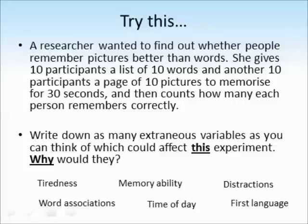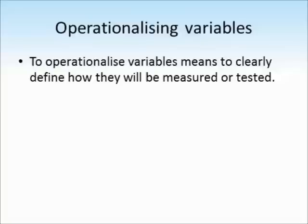Here are some examples of extraneous variables. Word associations could affect people's results in the word condition — if words related to food are included, participants might be more or less likely to remember those based on personal preferences. We've already discussed time of day and first language. Some participants might just not have very good memories, and if by chance the majority of those are in one condition, that will affect the results of that condition.